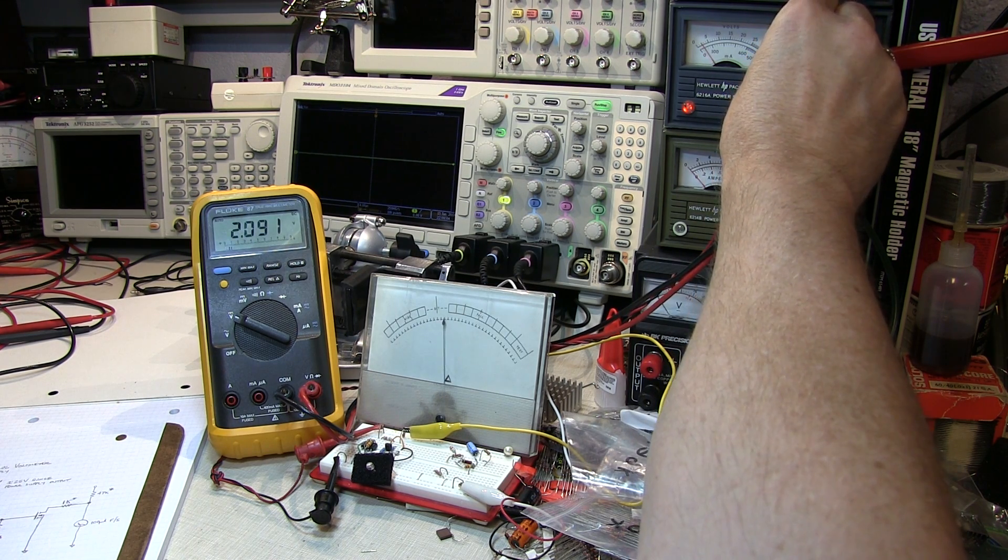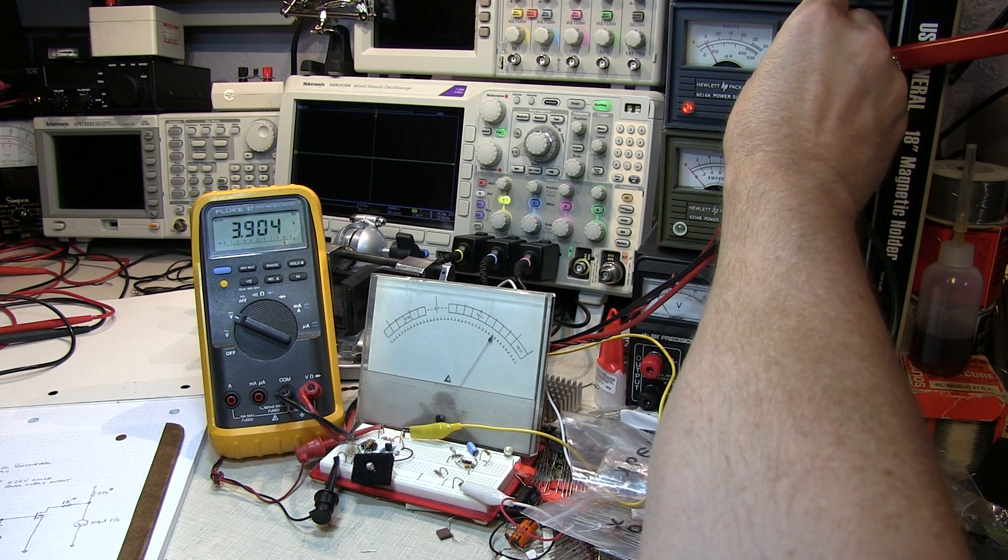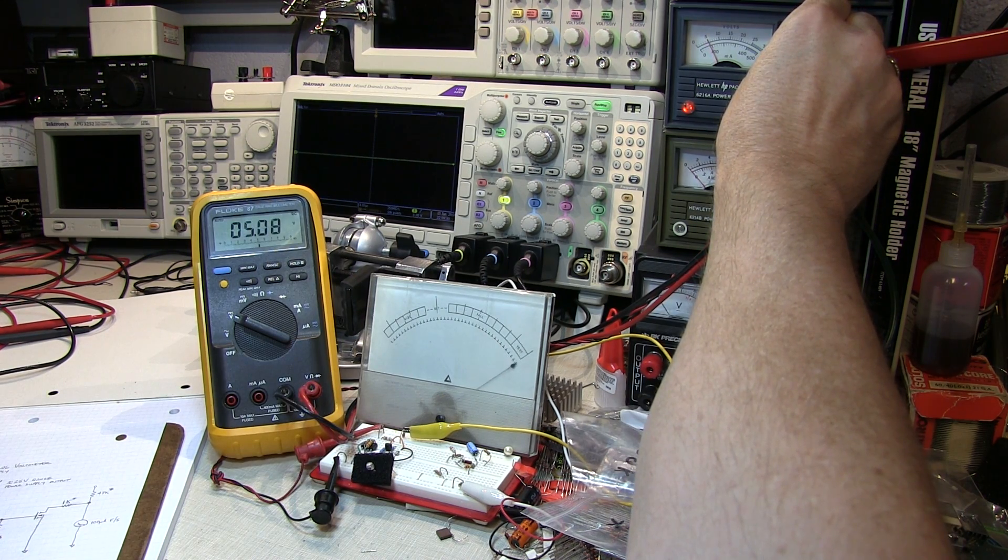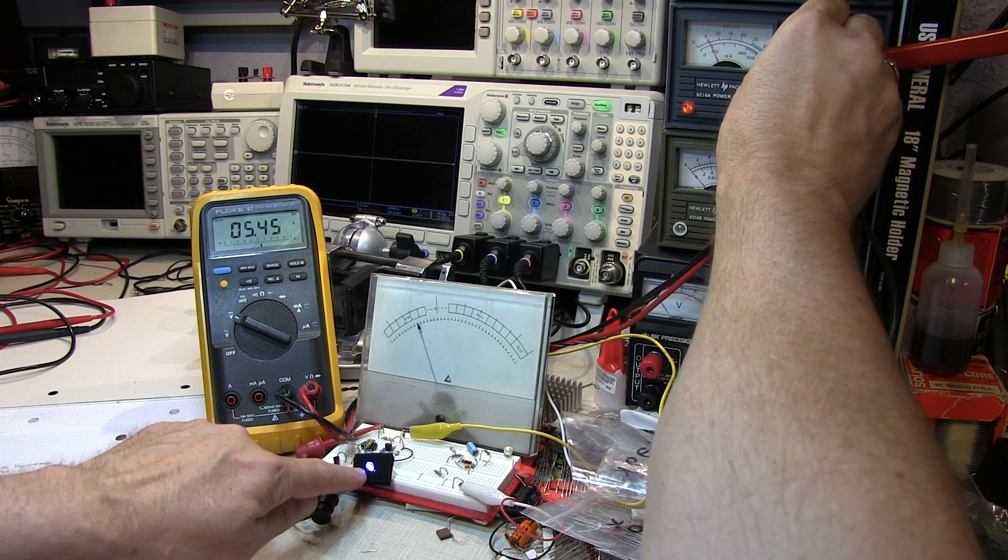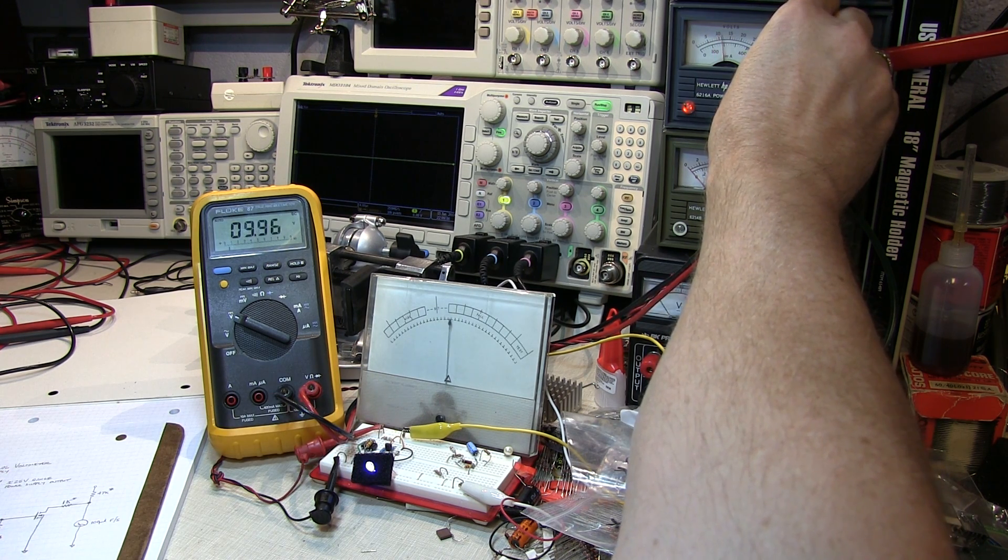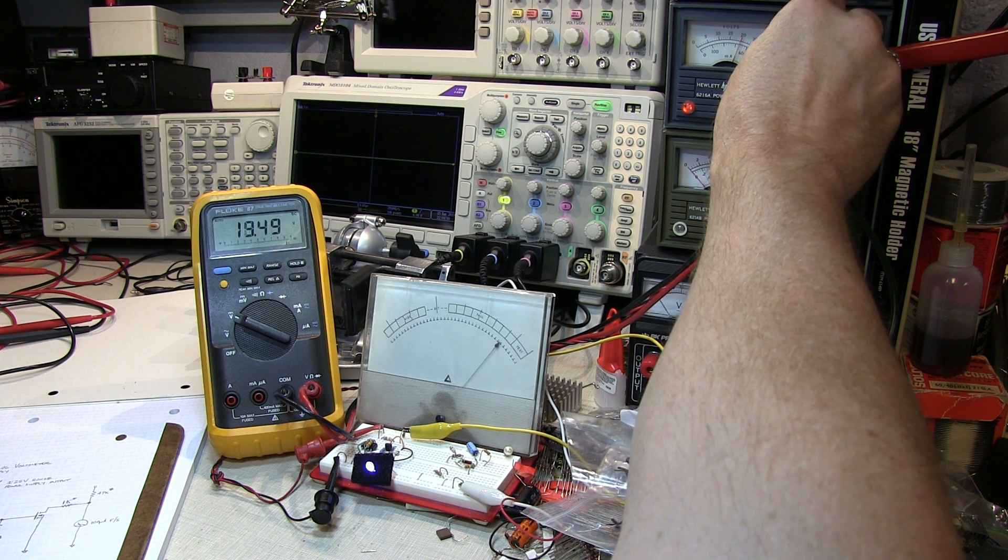You'll notice I turn the voltage up on my power supply here, we see the meter moving up here. When I reach full scale, the meter resets scale, I get an indicator light down here, and I can continue to increase the voltage up to yet another full scale.